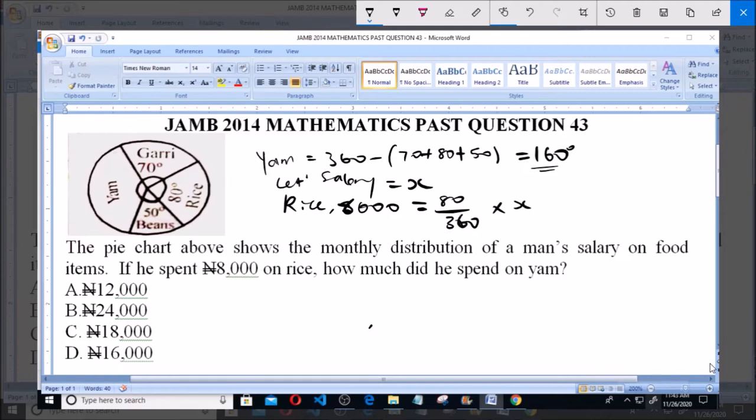So from here, we have that x equals 36,000 Naira. Now since we've gotten the man's salary,